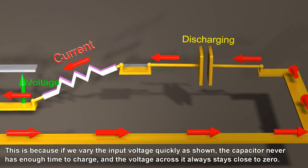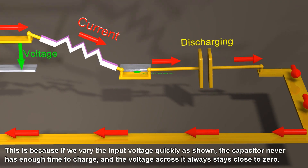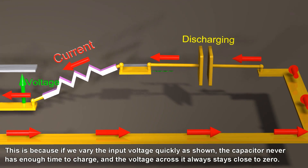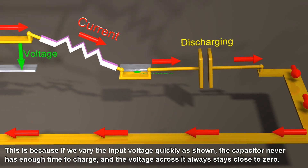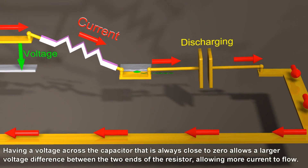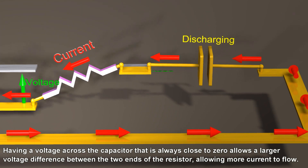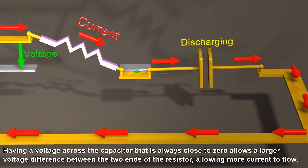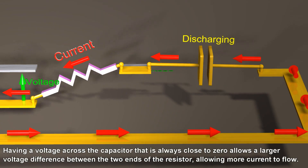At high frequency, a larger amount of current will flow, since the voltage across the capacitor does not have the ability to change instantaneously and the voltage across it always stays close to zero. Having a voltage across the capacitor that is always close to zero allows a larger voltage difference between the two ends of the resistor, allowing more current to flow.